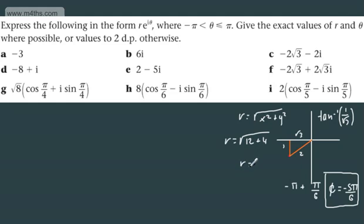So from this, we can see r is going to be equal to the root of 16, which is 4. So we can now express this as z equals 4e^(-5π/6·i).